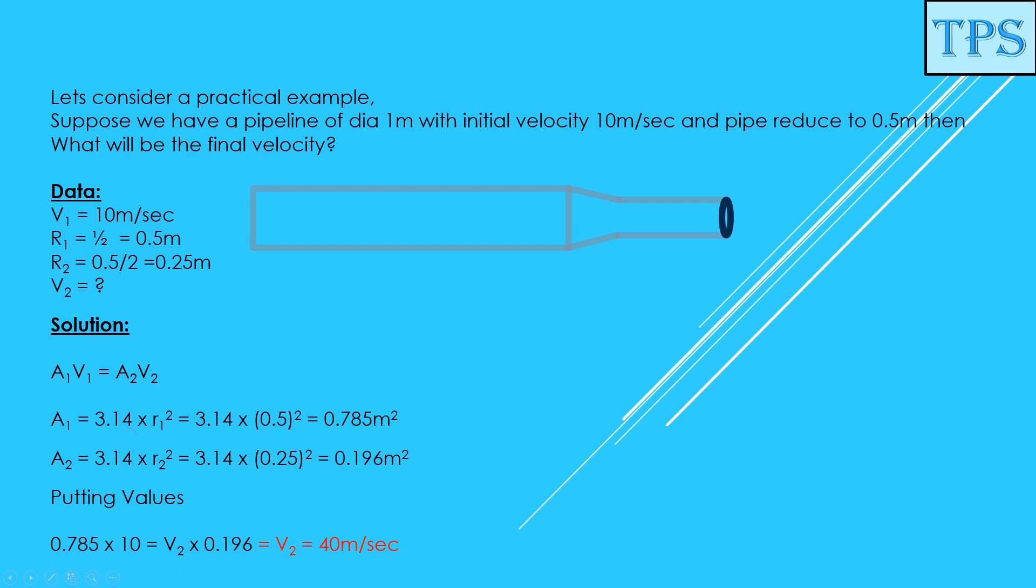Now area of the smaller pipe: 3.14 multiplied by r2 squared. What is r2? That is 0.25. Because this pipe diameter is 0.5 meters, we divide by 2, so 0.25 meters is the radius. We get the area of the smaller pipe: 0.196 square meters.